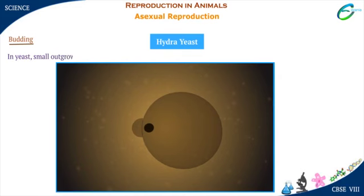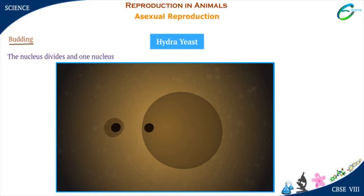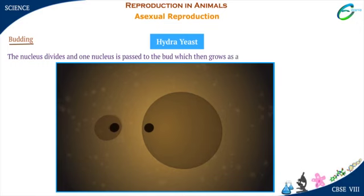A small outgrowth, a bud, appears on the parent yeast. The nucleus divides and one nucleus is passed to the bud, which then grows as a new yeast cell.